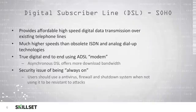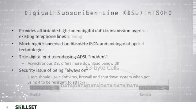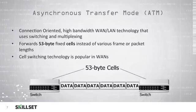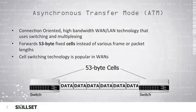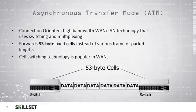Asynchronous Transfer Mode or ATM is a connection-oriented high-bandwidth technology that can be used for wide area networks or local area networks, and it uses switching and multiplexing. ATM uses 53-byte fixed cells instead of different sizes of frames or packets. Cell switching technology is popular in wide area networks. For the CISSP examination, you should remember that ATM uses 53-byte cells instead of packets.